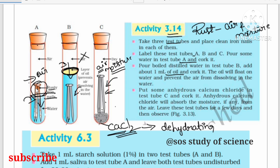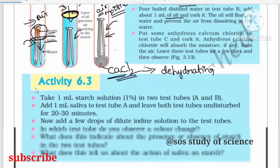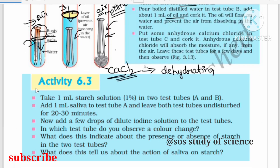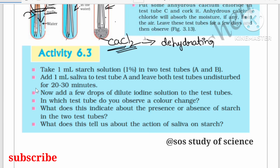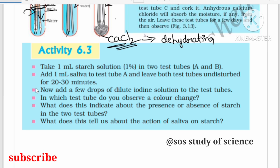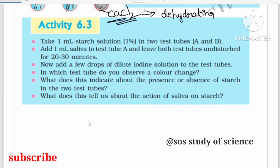Now let us go to Activity 6.3, which is from the lesson on carbon compounds and life processes. This activity appeared as a direct question in the 2019 public exam and is very important. We begin by taking 1 ml of starch solution.